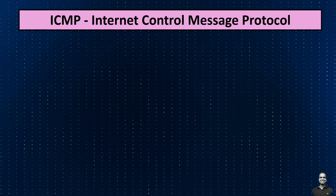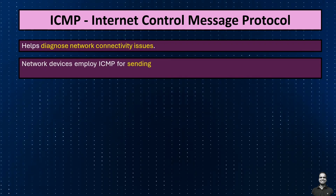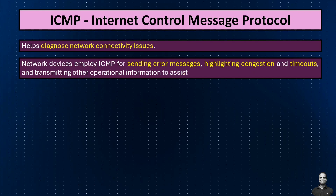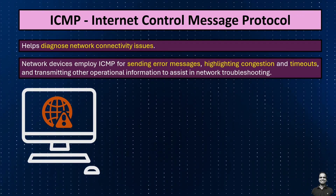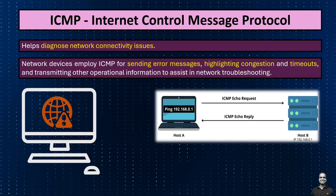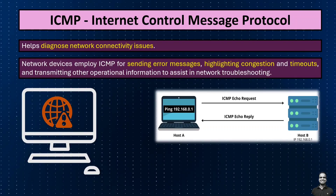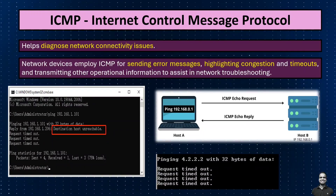Next in network management protocols, we have ICMP — Internet Control Message Protocol. ICMP helps diagnose network connectivity issues. Network devices employ ICMP for sending error messages, highlighting connection timeouts, and transmitting operational information to assist in network troubleshooting. For example, if you're experiencing connectivity issues while trying to access a website, you might run a diagnostic tool like ping. ICMP sends echo request messages from your computer to the destination server and waits for echo reply messages. If the server is unreachable due to network congestion, routing issues, or firewall configurations, ICMP returns error messages like 'destination host unreachable' or 'request timeout,' helping you identify the source of the connectivity problem.